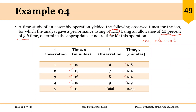The total of these nine values is 10.35, and that is what we use to calculate the average observed time. If we divide 10.35 by 9, we get the average observed time. We then multiply that answer by 1.10, the performance rating, to find the normal time, and then add an allowance of 20% to find the standard time.